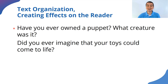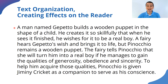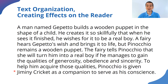And you know why I asked you that? Because I'm going to ask you to read the following summary of this story. The fairy tells Pinocchio that she will turn him into a real boy if he manages to gain the qualities of generosity, obedience, and sincerity. To help him acquire those qualities, Pinocchio is given Jiminy Cricket as a companion to serve as his conscience.